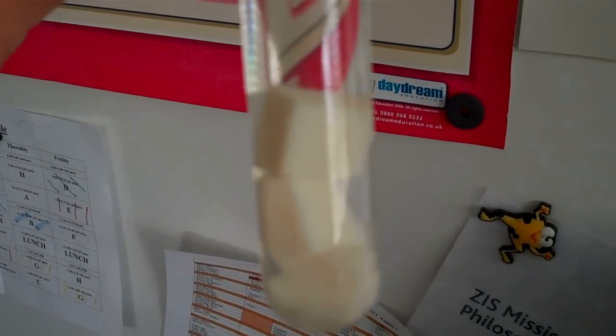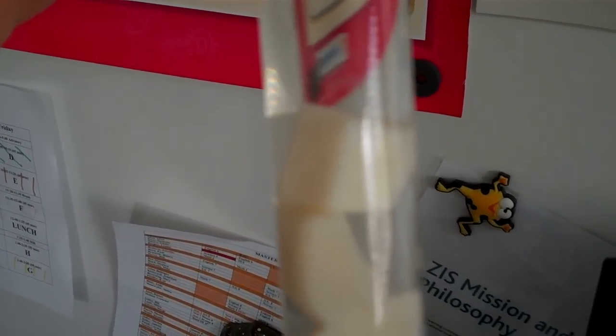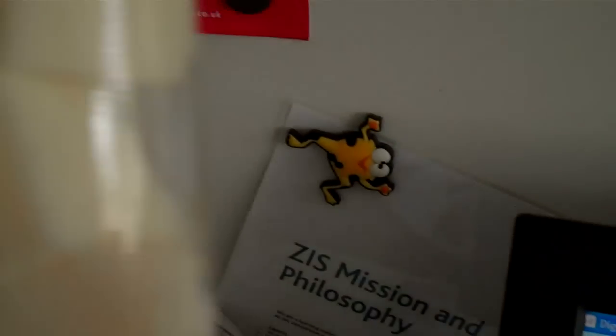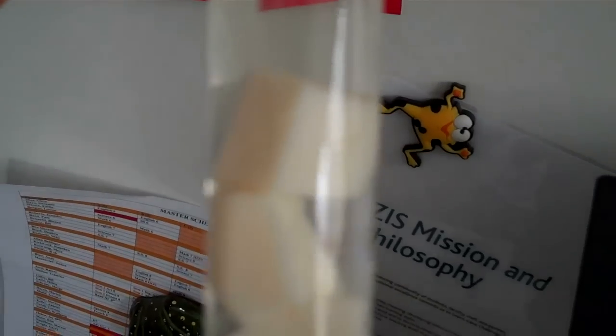So we have some egg white, and you can see here in each test tube there's going to be three pieces of egg white. In test tube A, we're going to put the enzyme pepsin with our egg white.